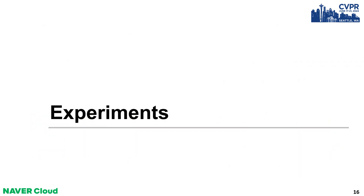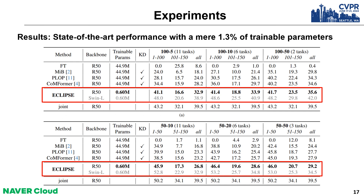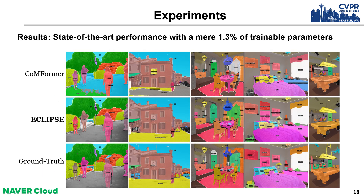Next is the experiments section. We conduct extensive experiments on ADE20K and COCO panoptic segmentation benchmarks, and the ADE20K semantic segmentation benchmark. Consequently, we achieve state-of-the-art results with a mere 1.3% of trainable parameters compared to existing methods. As shown in the qualitative comparison samples, our method achieves more robust continual panoptic segmentation results.